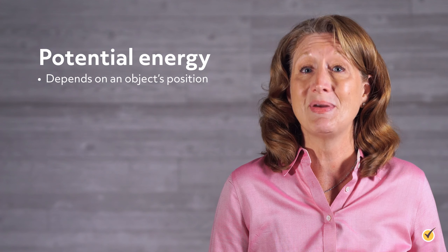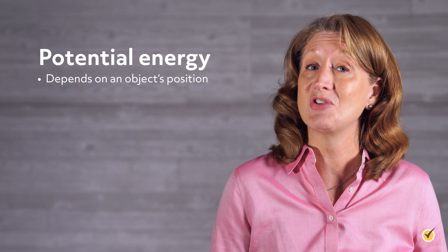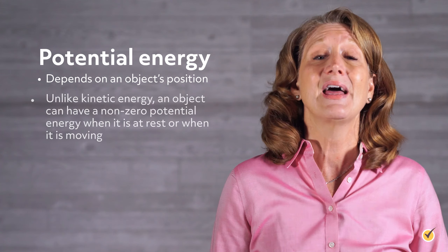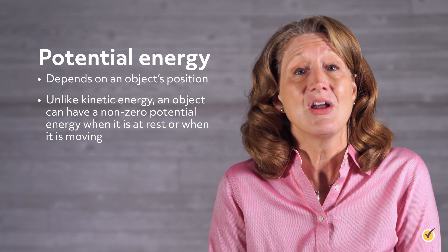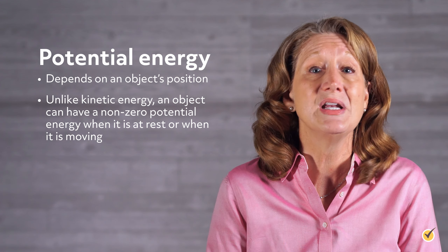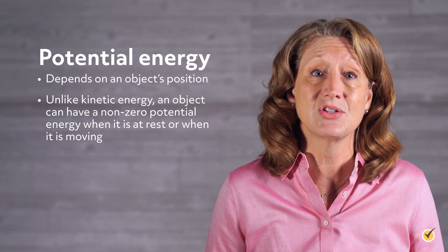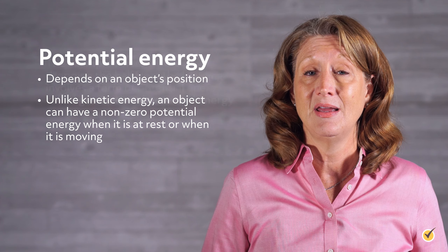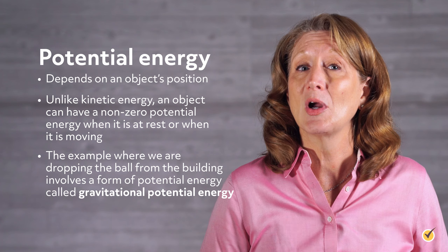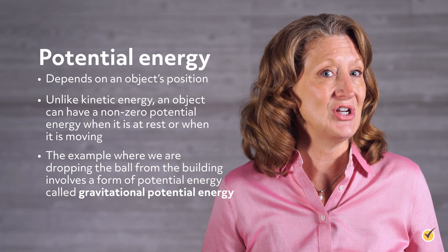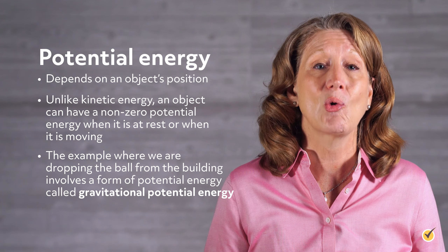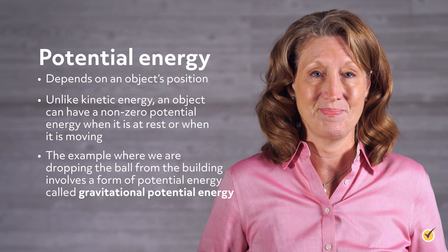So where does potential energy come in? Potential energy depends on an object's position. Unlike kinetic energy, an object can have a non-zero potential energy when it is at rest or when it is moving. The example where we are dropping the ball from the building involves a form of potential energy called gravitational potential energy.